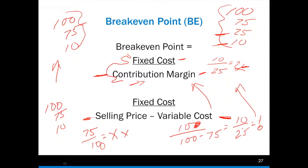Again, memorizing two different formulas is fine if you can do it. But if you can go back and understand what an income statement looks like — selling price, variable cost, contribution margin, gross profit, fixed costs — and understand those relationships, now you can sit down and figure out what you need in order to solve the problem.